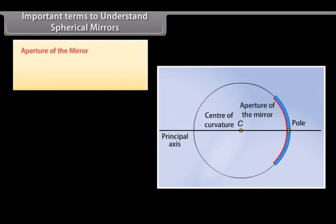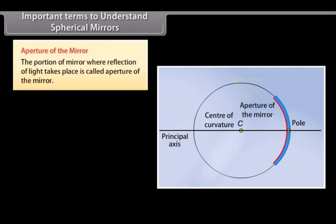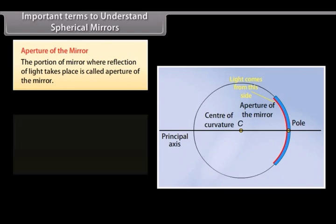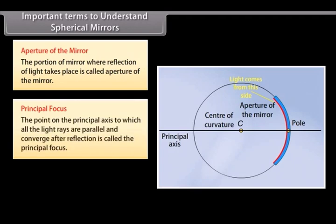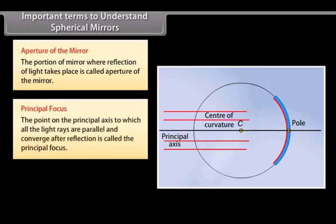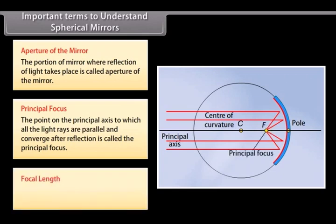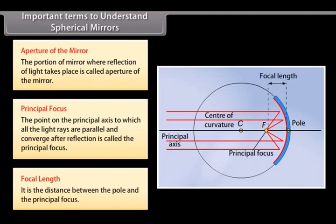Aperture of the mirror: the portion of the mirror where reflection of light takes place is called the aperture of the mirror. Principal focus: the point on the principal axis to which all the light rays, parallel to it, converge after reflection is called the principal focus. Focal length: it is the distance between the pole and the principal focus.